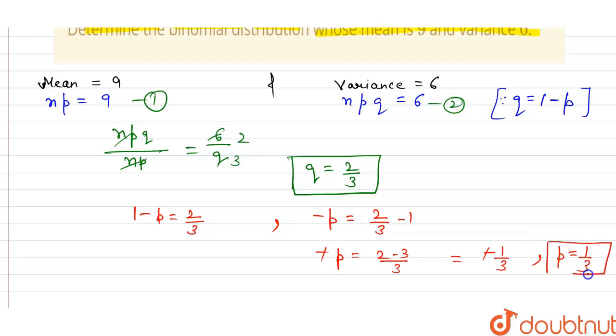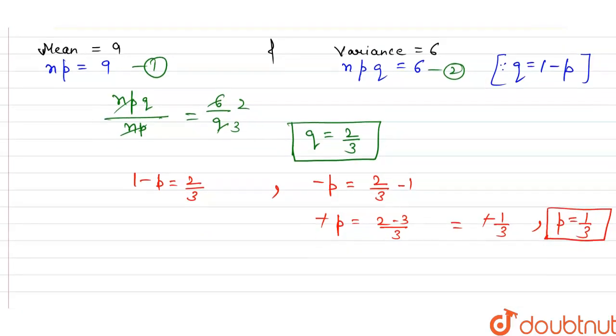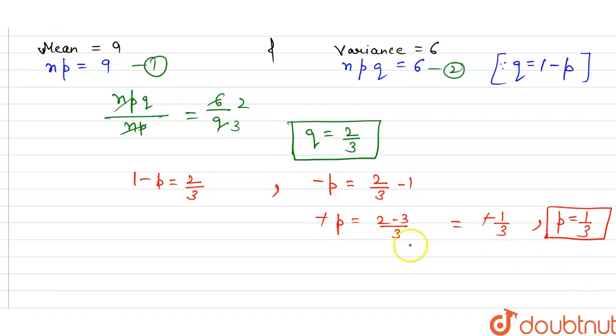Now put this value in equation 1, then we have n multiply 1 divided by 3 is equal to 9, and value of n is equal to 9 multiply 3 is 27. Now binomial distribution is